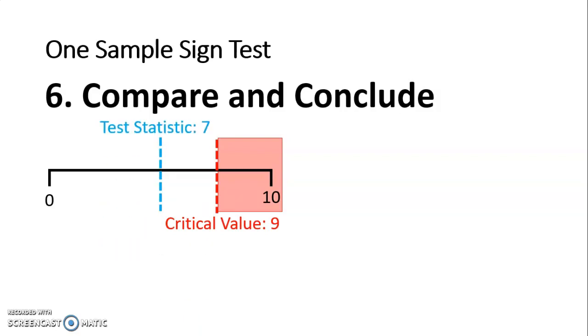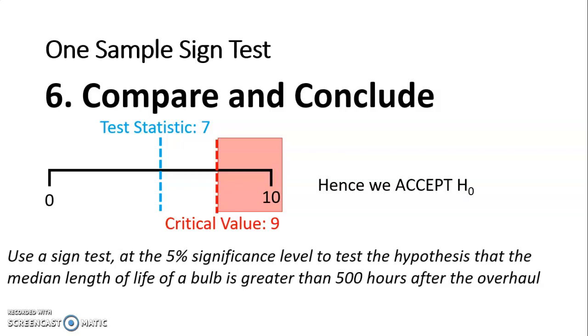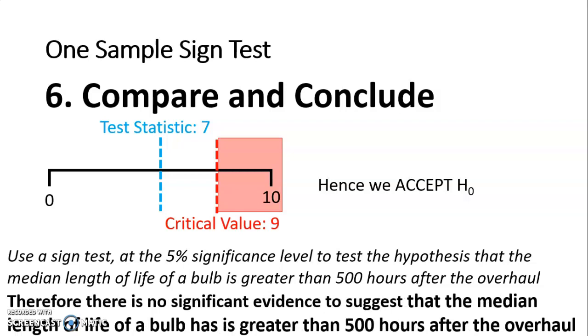As we can see, that doesn't go in the reject zone, so I'm accepting H0. There's not enough evidence to say that we are rejecting H0, so we are accepting H0. To do my conclusion in context, I'm just going to remind myself of the question. It was asking me to test if the life of a bulb is greater than 500 hours. I am accepting H0. My H0 said that the median is 500 hours, so I don't have enough evidence to confirm that hypothesis. Therefore, there is no significant evidence to suggest that the median length of life of a bulb is greater than 500 hours after the overhaul.